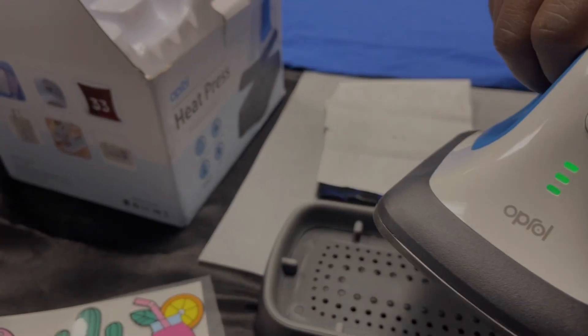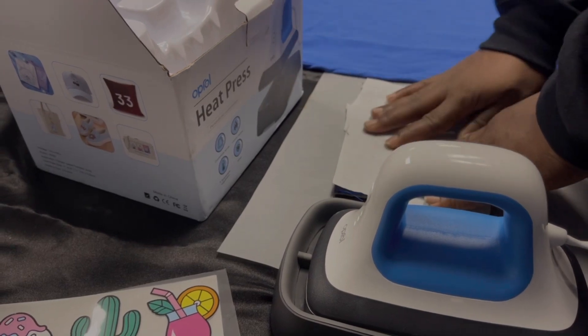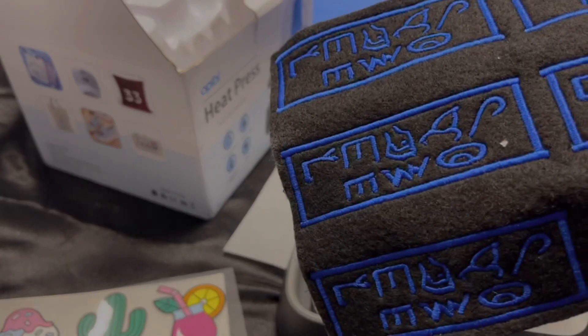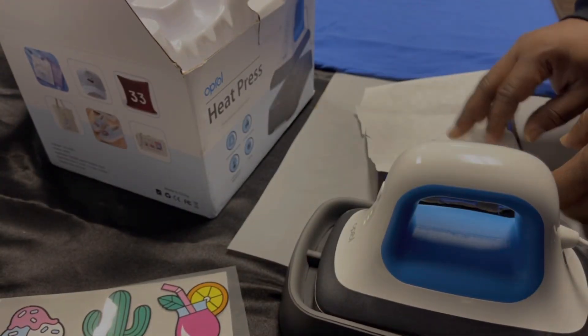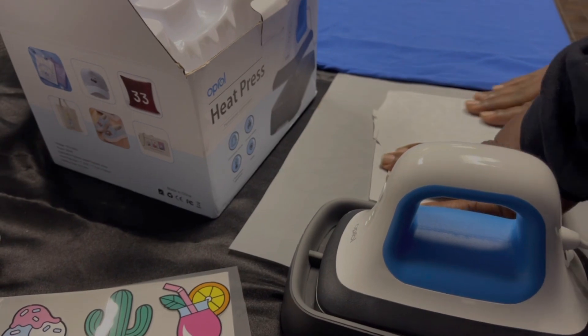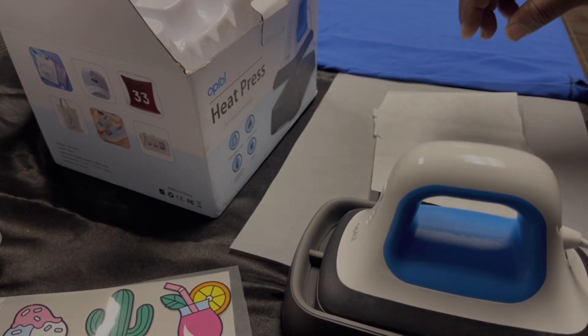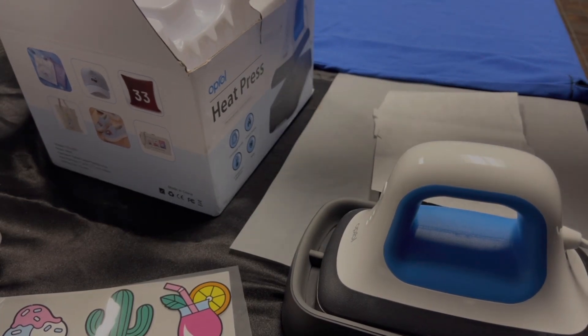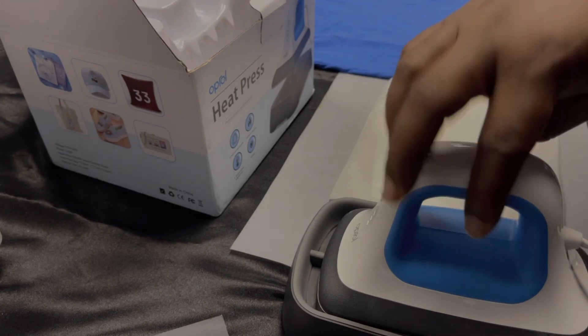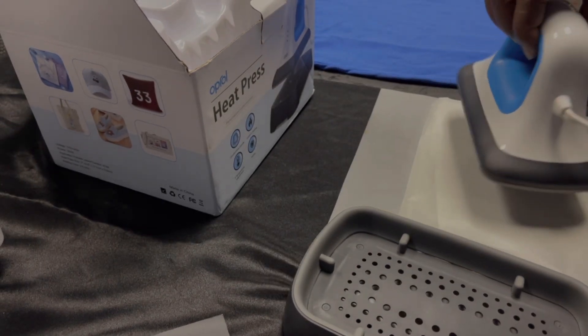We're back, didn't really take that long to warm up. You got the heat bond going on the opposite side. Place your heat bond down, and I'm going to teach you how to do this. Use a Teflon sheet, sit that on top of there like that, and press down.